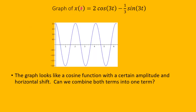Let's look at the graph of x of t equals 2 cosine 3t minus 1 third sine 3t. It looks periodic — like a cosine function with a certain frequency, a certain amplitude, and a certain horizontal shift. Can we algebraically manipulate this formula to get these two terms into one cosine term? The answer is yes, and we will see how to do it.